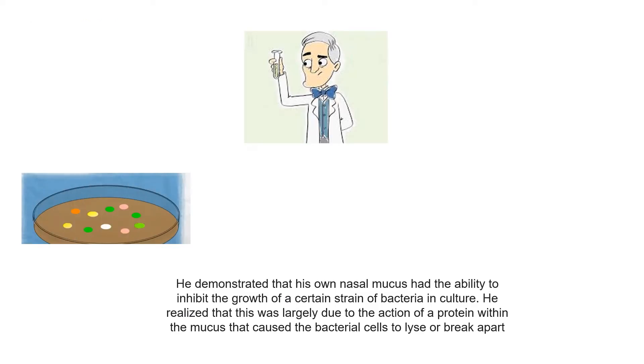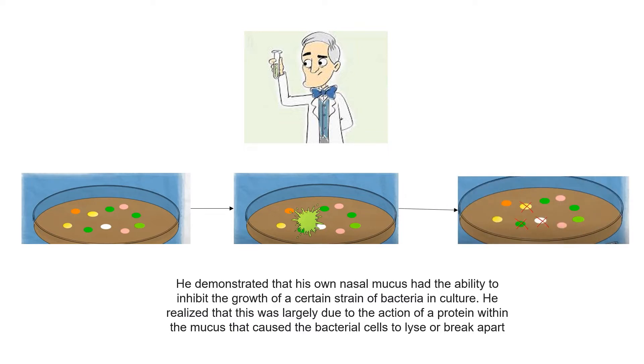How did the story begin? Accidentally, his own nasal mucus fell into a container which contained a certain strain of bacteria. It could be seen that this mucus had the ability to inhibit the growth of the bacteria. He realized this was largely due to the action of a protein within the mucus that caused the bacterial cells to lyse or break apart.